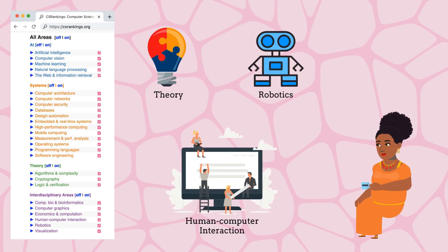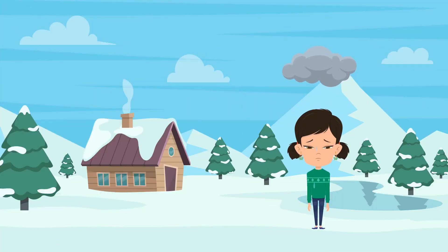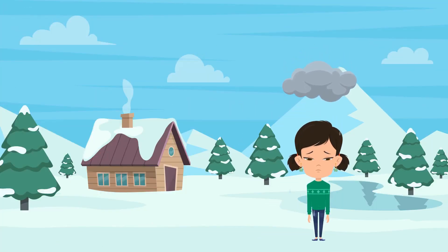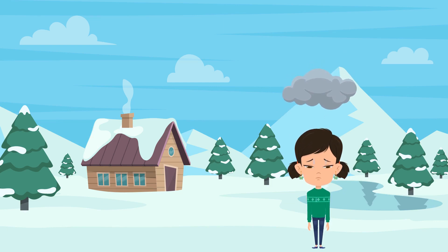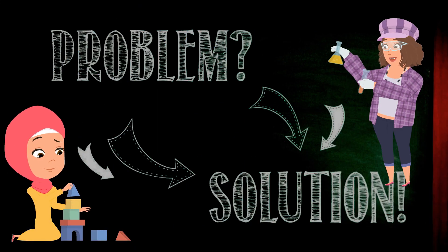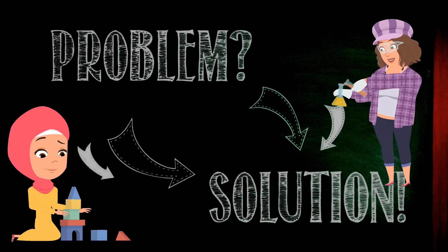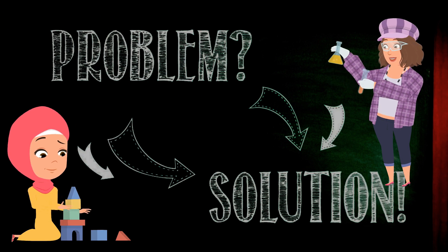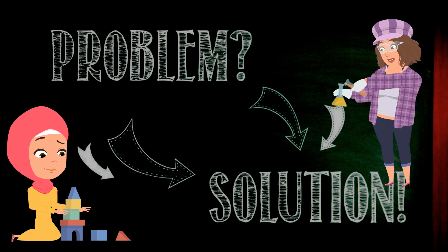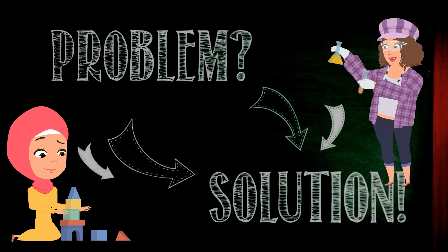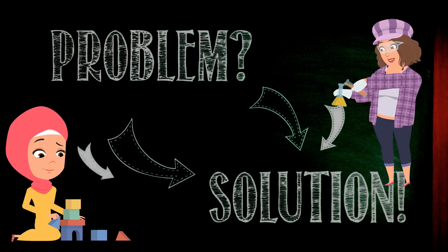Choosing a research area can be a daunting task. Some of you might have a rough idea of what you want to work on, so you might be wondering how can I do research in machine learning? One thing you need to understand is that research areas are usually defined by the kind of problems researchers in that area try to solve, and it is usually much less about what tools or mechanisms are used to solve those problems.